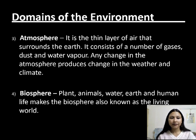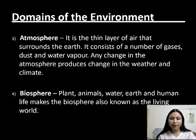After that, we have atmosphere. It is a thin layer of air that surrounds the earth. It consists of a number of gases, dust, and water vapour. Any change in the atmosphere produces a change in the weather and climate. Then, biosphere — plants, animals, water, earth, and human life make a biosphere, also known as the living world.